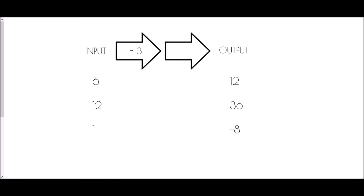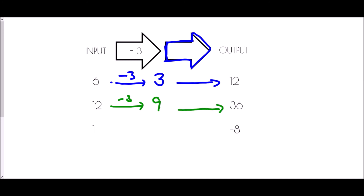Let's try another set with a missing function. With input six: six take away three is three — how do I get to twelve? Options are add nine or multiply by four. With input twelve: twelve take away three is nine — to get to 36, it could be adding 27 or multiplying by four. With input one: one take away three is negative two, and negative two times four is negative eight. Multiply by four works in every case.